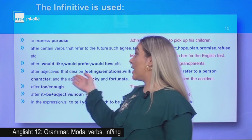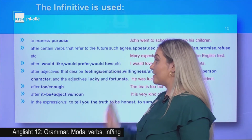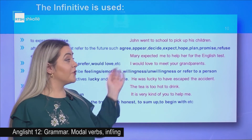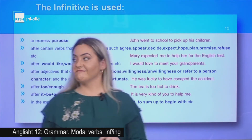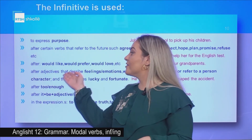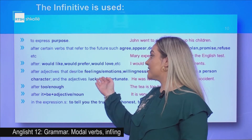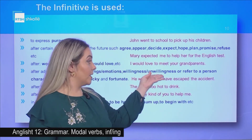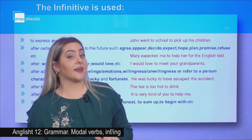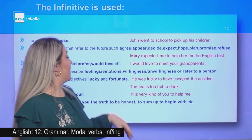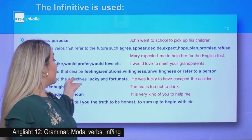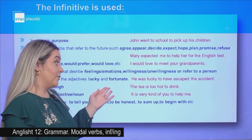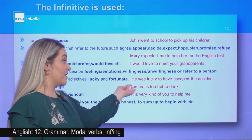The to-infinitive is used after would like, would prefer, would love, etc. Example: I would love to meet your grandparents. It is also used after adjectives that describe feelings, emotions, willingness, unwillingness, or refer to a person's character, and after the adjectives 'lucky' and 'fortunate'. Example: He was lucky to have escaped the accident.